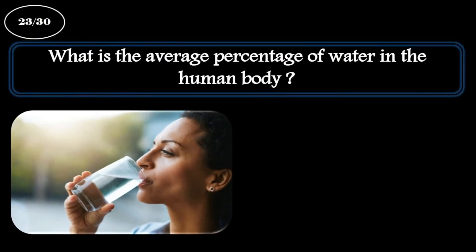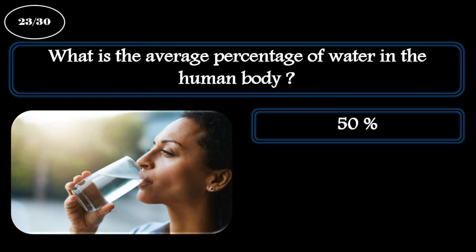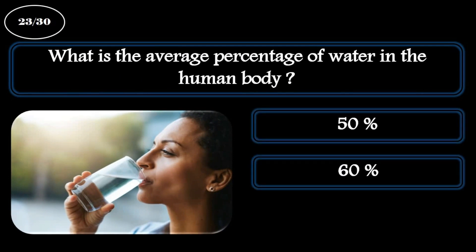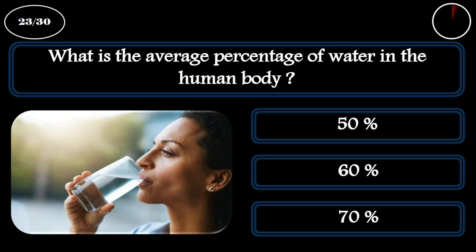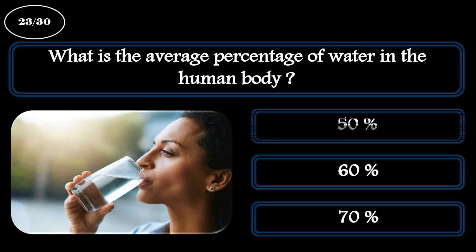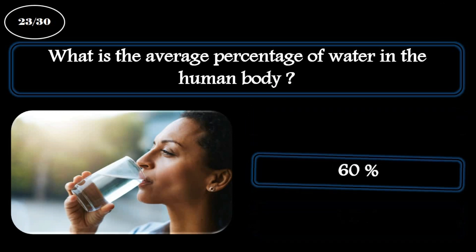Question 23. What is the average percentage of water in the human body? The correct answer is 60%.